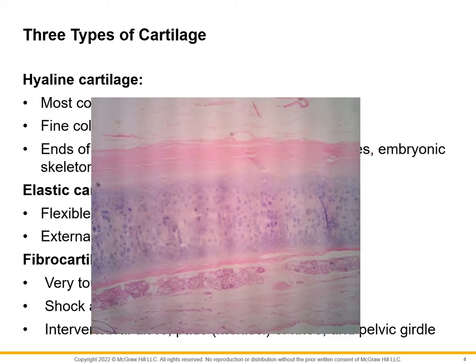When we look at it in lab, it stains very kind of pepto-bismol pink, but it's very smooth. It looks very smooth, basically like amber. If I'm going to have something all over my body, I want it to be smooth and comfortable.